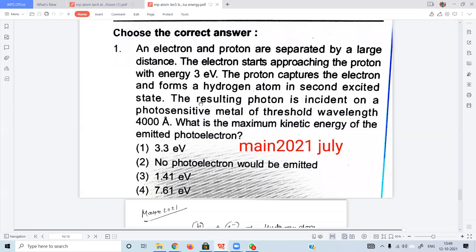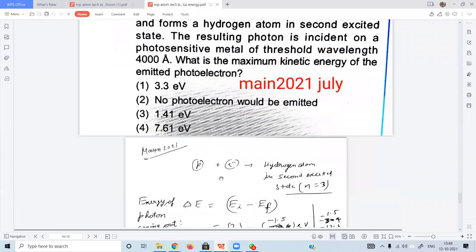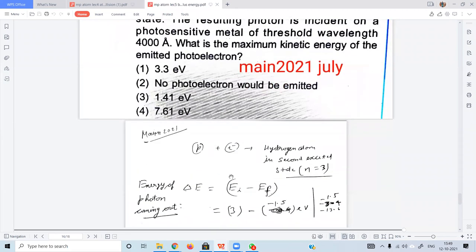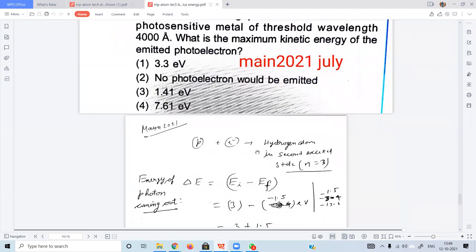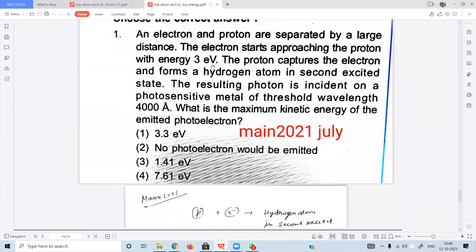The energy difference will be released. Proton plus electron - the initial energy was the electron's energy, and the final energy in the second excited state. Second excited state means n equals three.